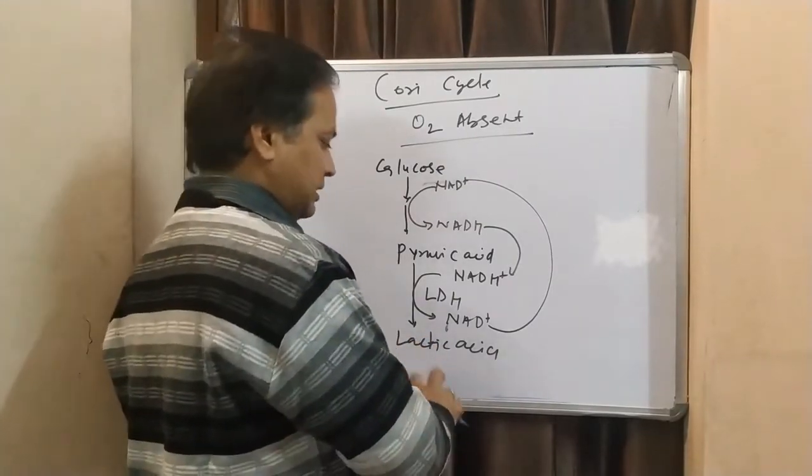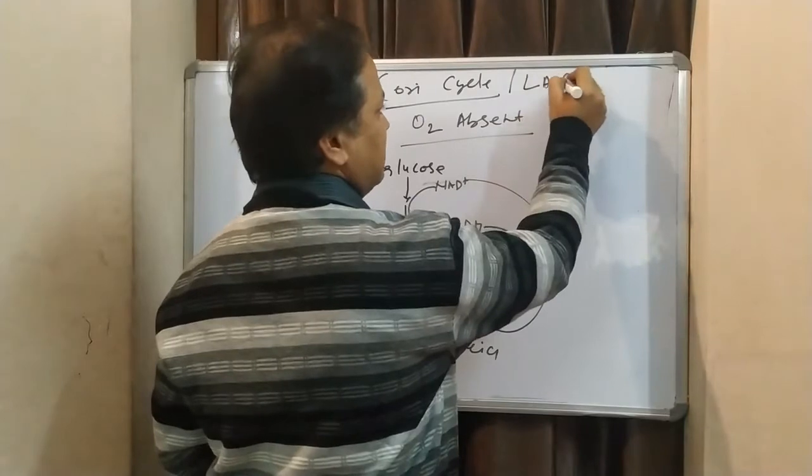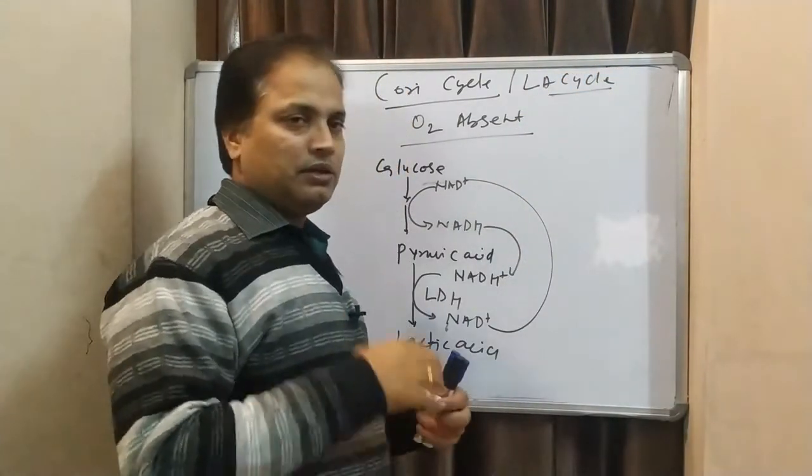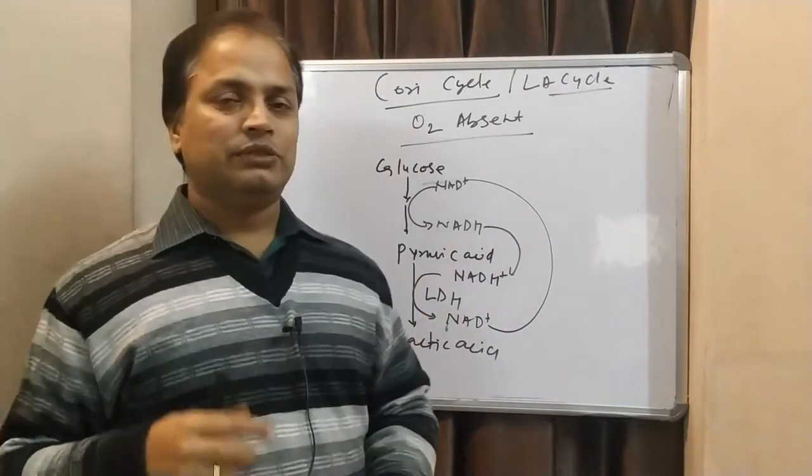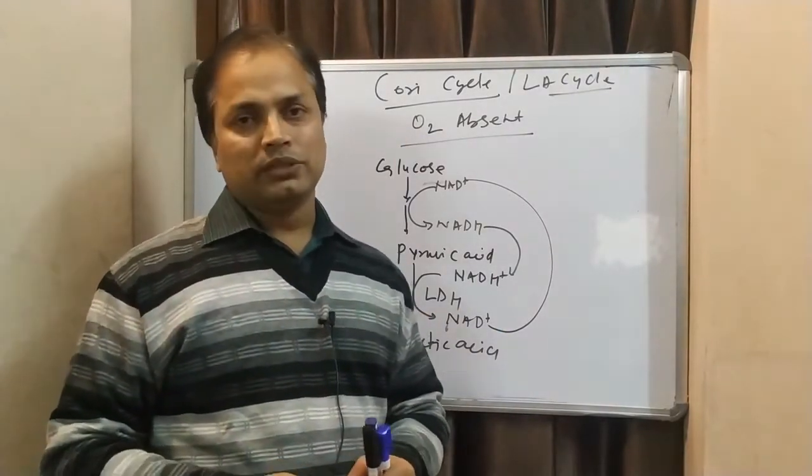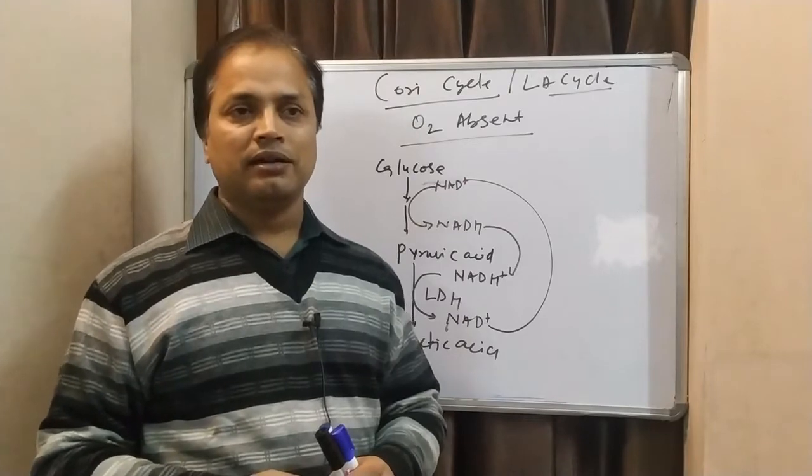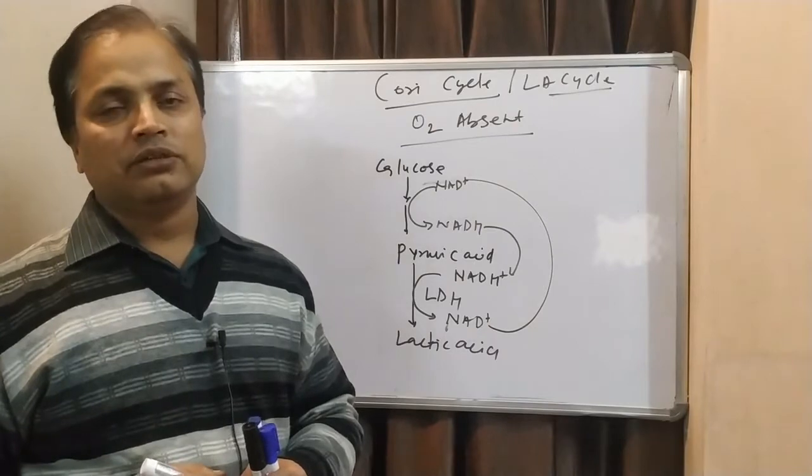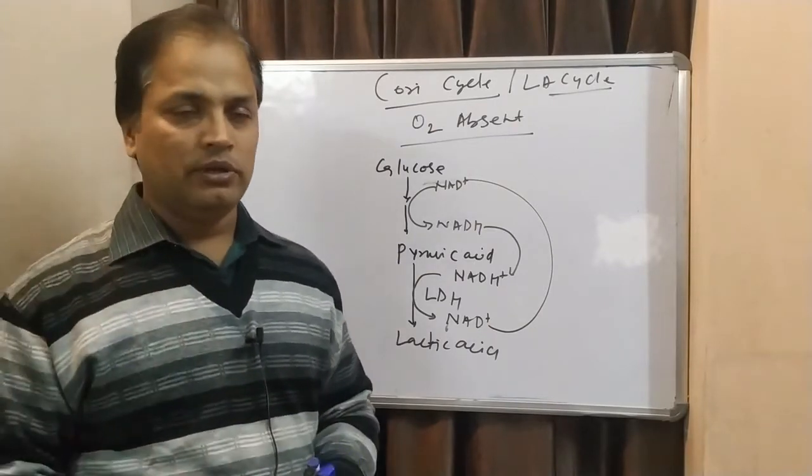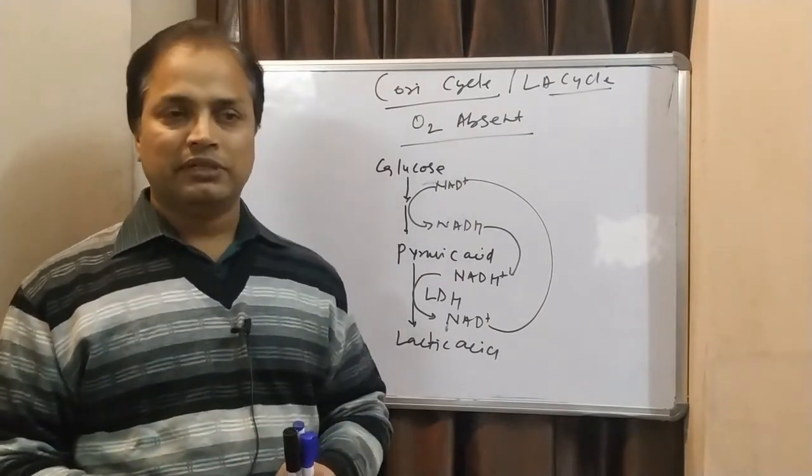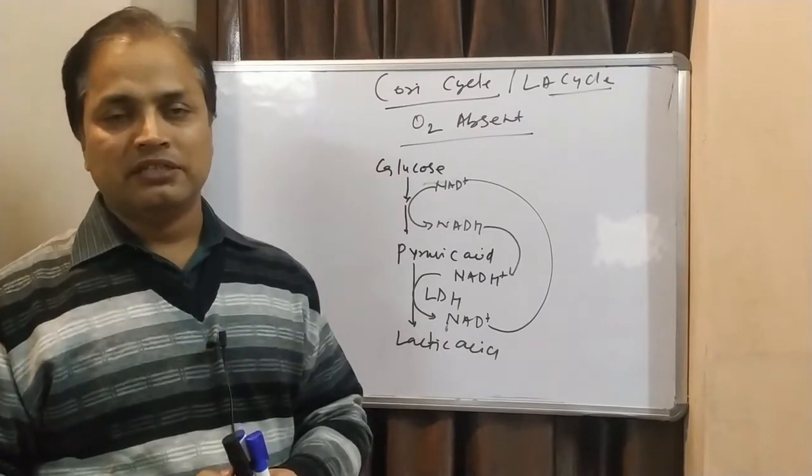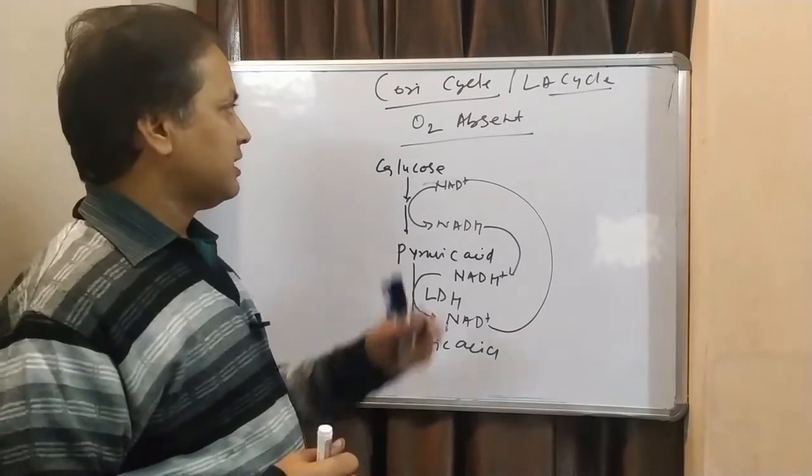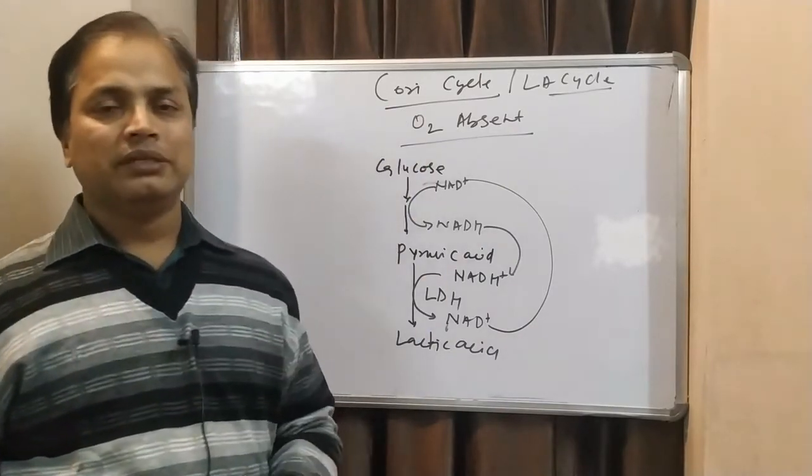Because of this lactic acid, this cycle is also called as lactic acid cycle. We are calling it Cori cycle because it was discovered by two scientists: Carl Ferdinand and Gerty Cori. Both are Cori. They discovered it, that's why we are calling it Cori cycle.